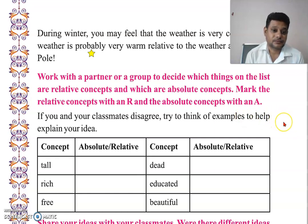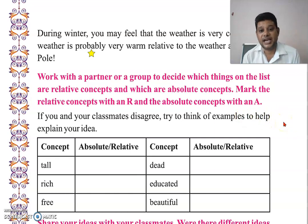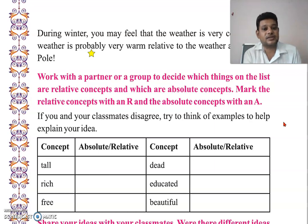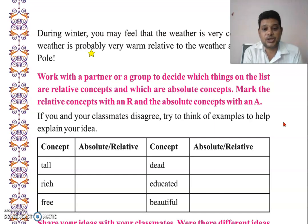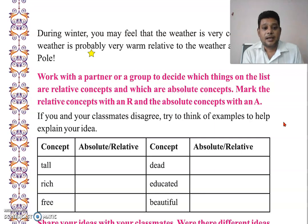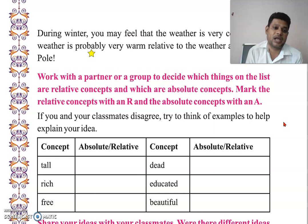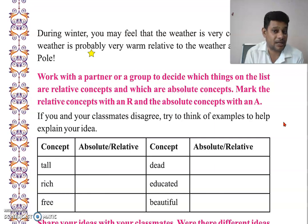Work with a partner or a group to decide which things on the list are relative concepts and which are absolute concepts. Mark the relative concepts with an R and the absolute concepts with an A. If you and your classmates disagree, try to think of examples to help explain your idea.